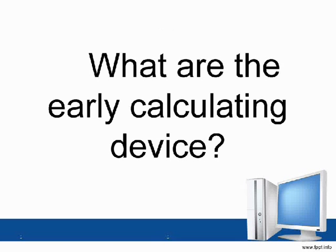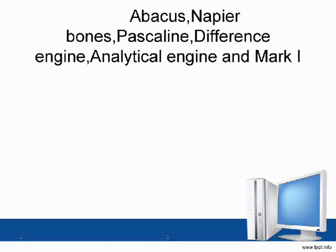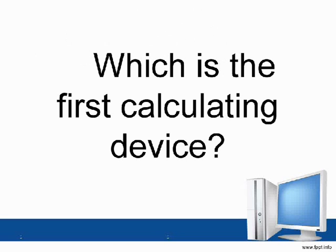What are the early calculating devices? Abacus, Napier Bones, Pascalin, Difference Engine, Analytical Engine, and Mark I. Which is the first calculating device?